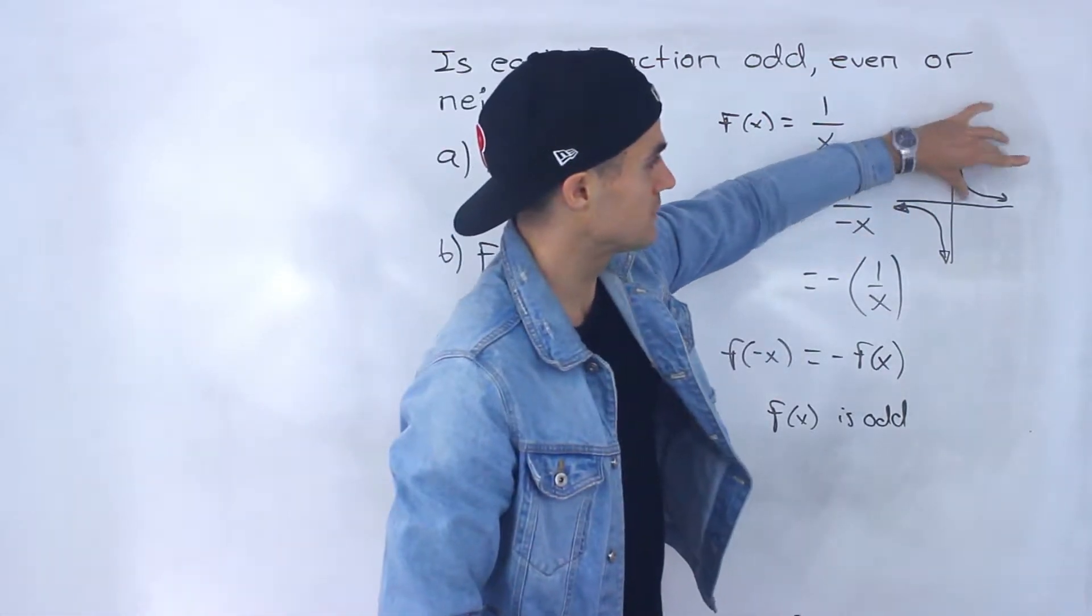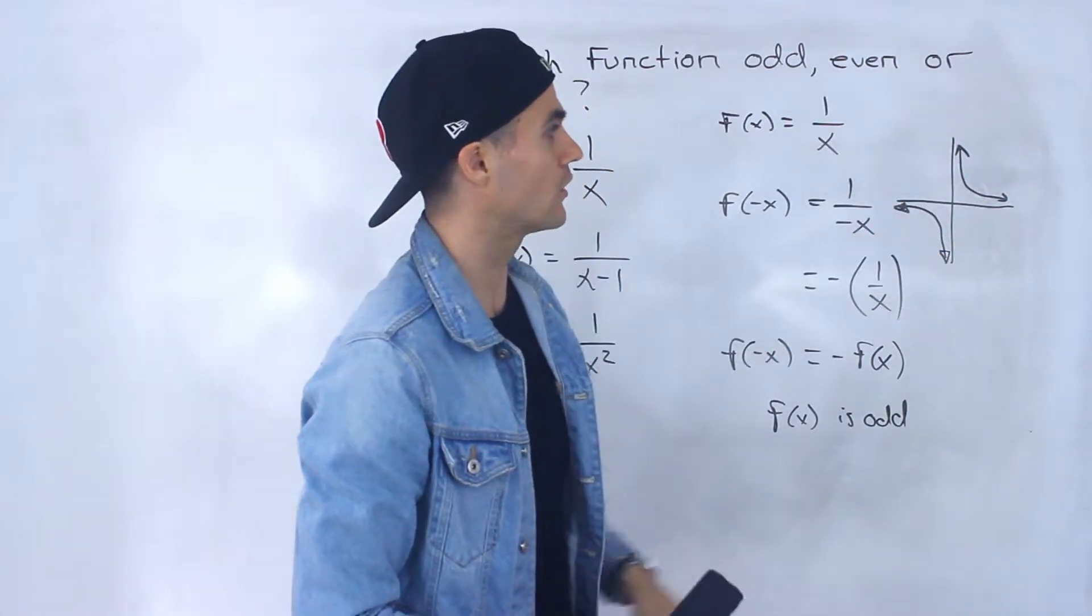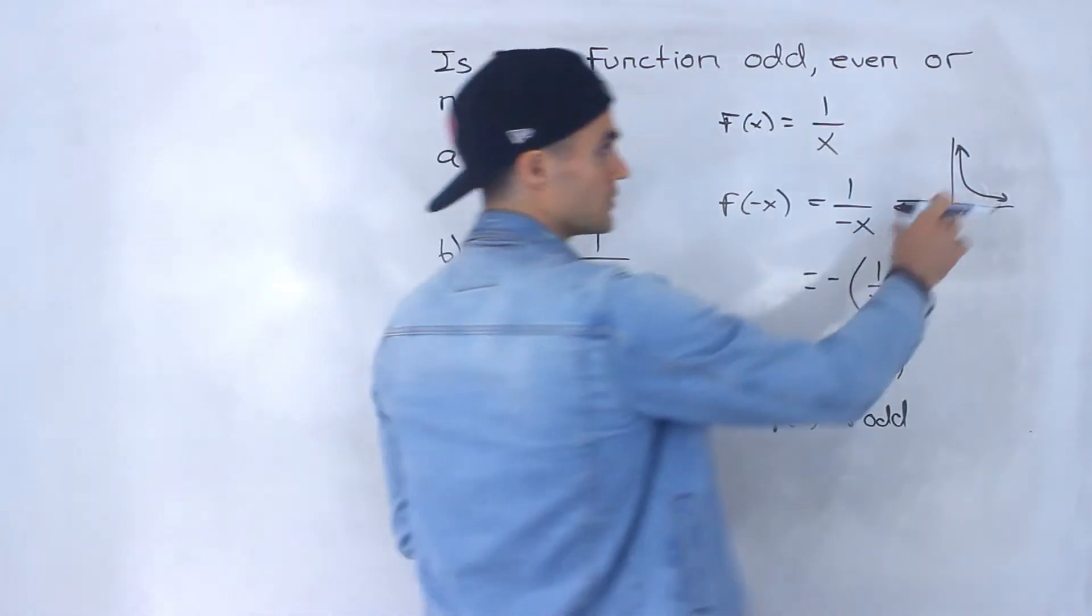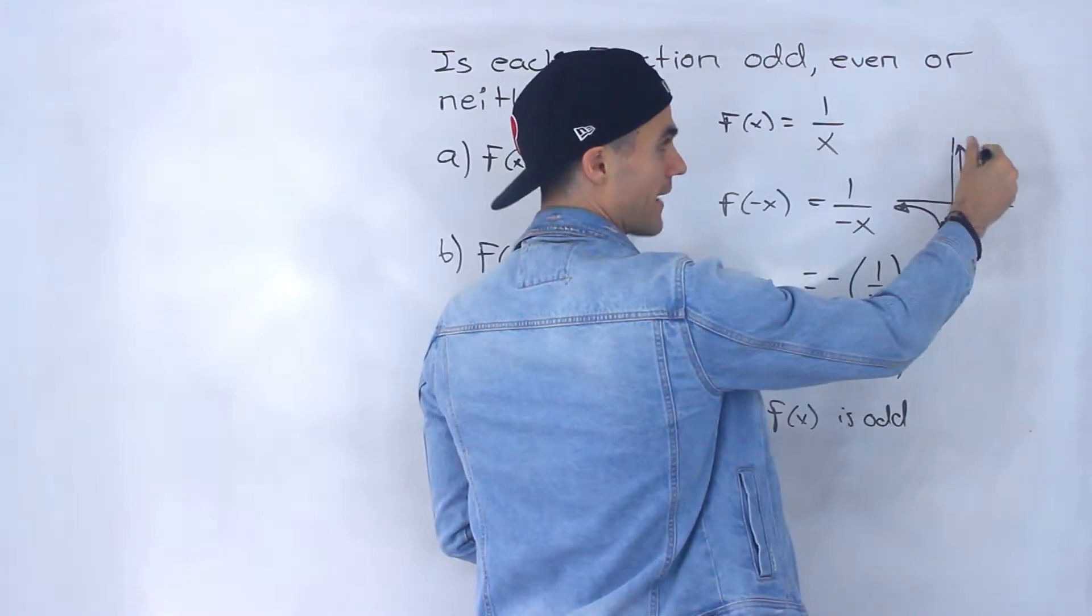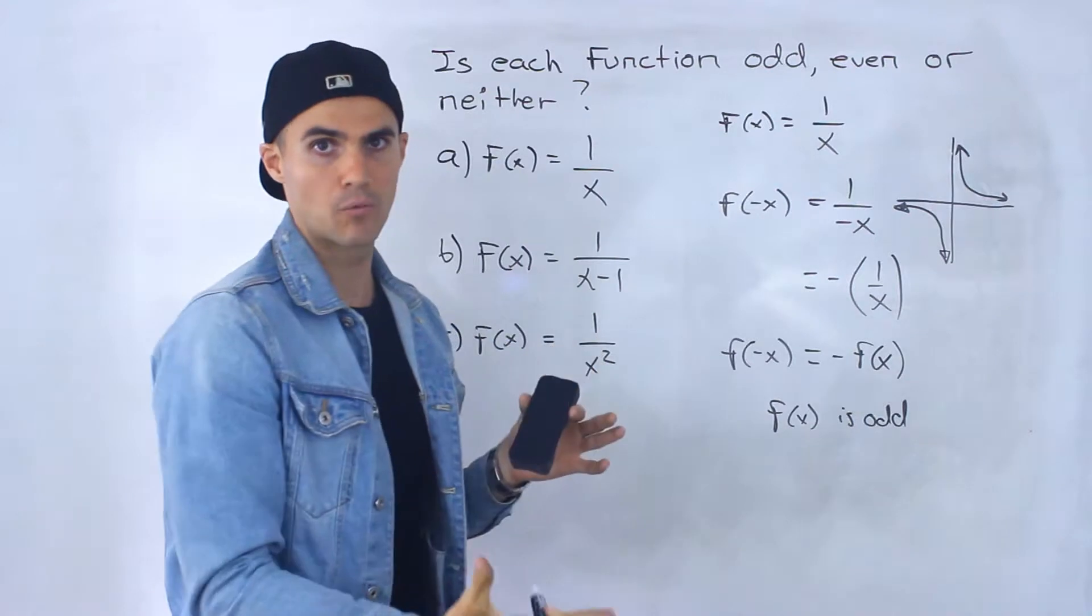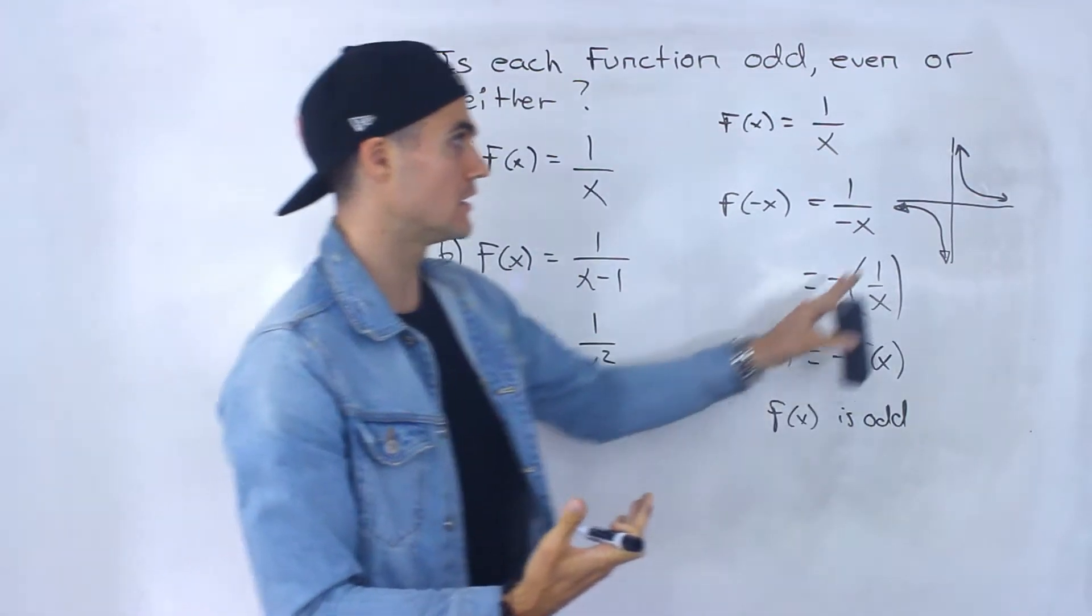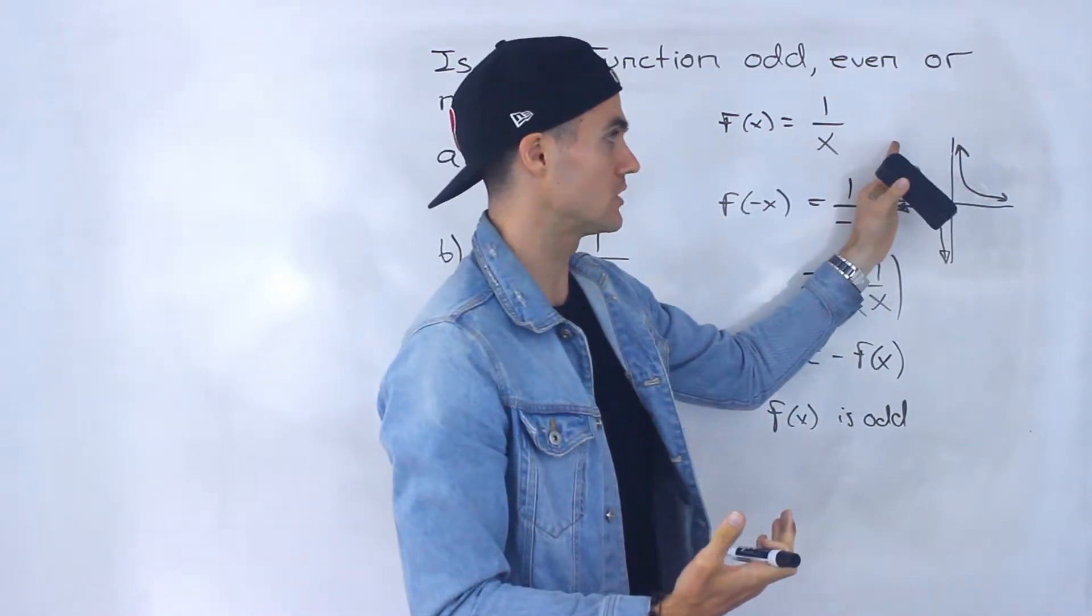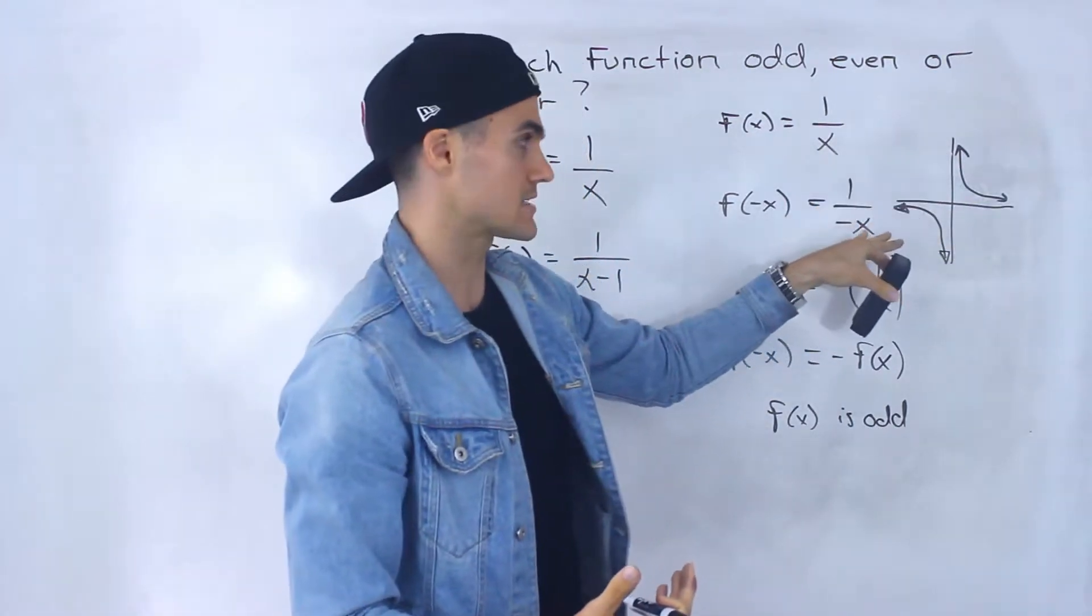Notice if we take this portion and we rotate it, we would end up with this portion. Or another way, if a function is odd, what you can do is take the portion on one side of the y-axis and reflect it in the x-axis and the y-axis. And if you get the other portion, then it's odd. So remember, if it's even, you can only reflect it on the y-axis to see if you get that other portion. For an odd function, you reflect it in the y-axis and the x-axis.